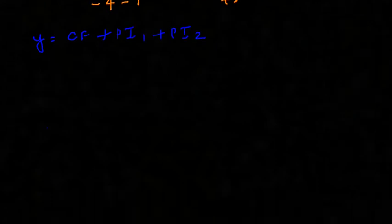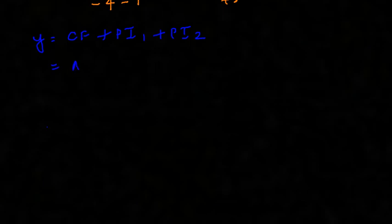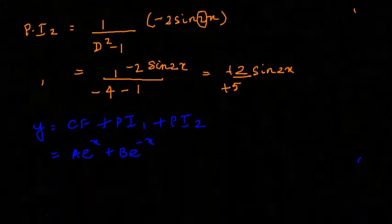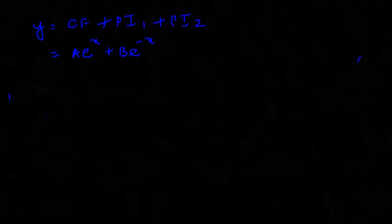So which is nothing but—you found that your CF was Ae^x plus Be^(-x). Am I right? Yes. That was your CF. And your PI₁ was nothing but what did you get for cos 2x?